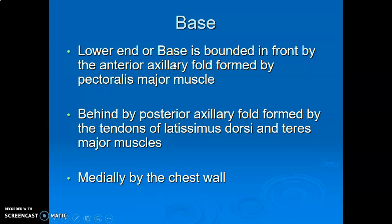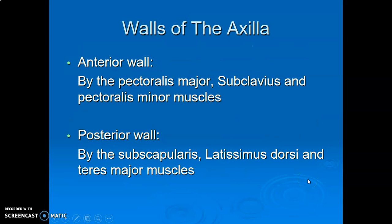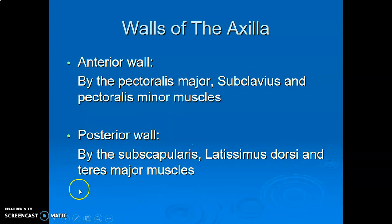The base on the lower end is bounded anteriorly by pectoralis major, posteriorly by the posterior axillary fold formed by latissimus dorsi and teres major, and medially by the chest wall. The anterior wall has three muscles: pectoralis major, pectoralis minor, and subclavius. The posterior wall also has three muscles: subscapularis, latissimus dorsi, and teres major.